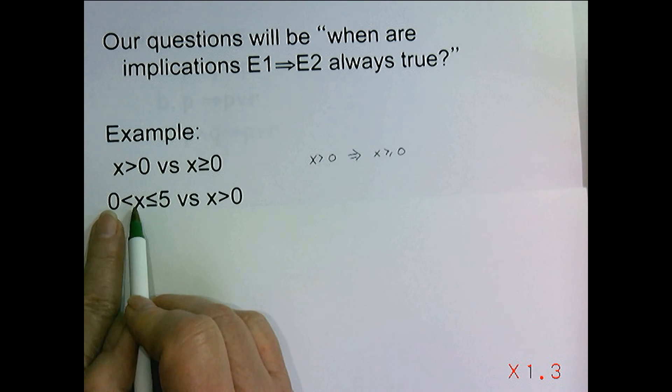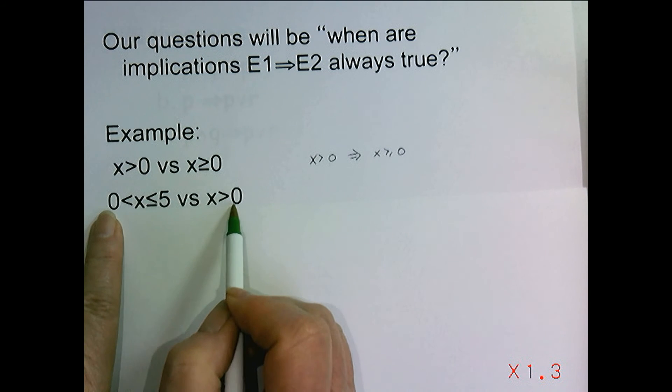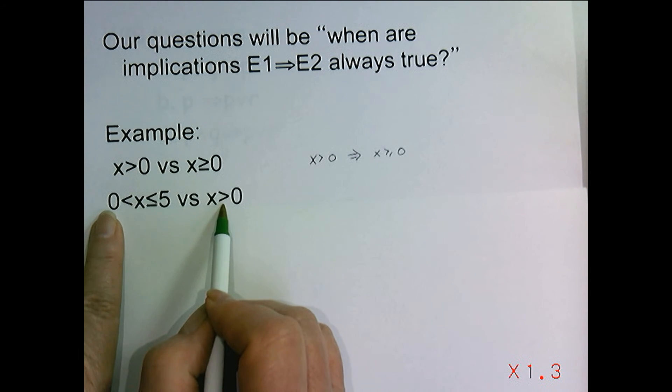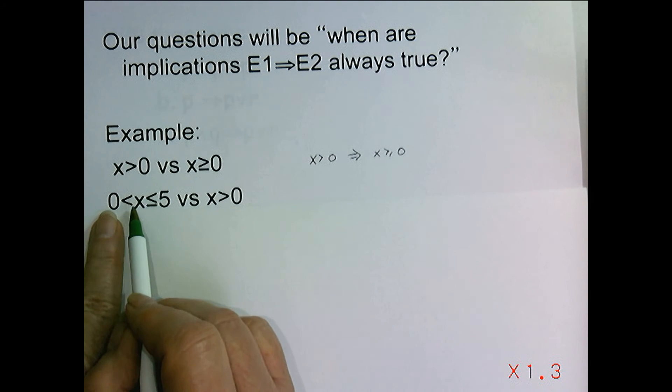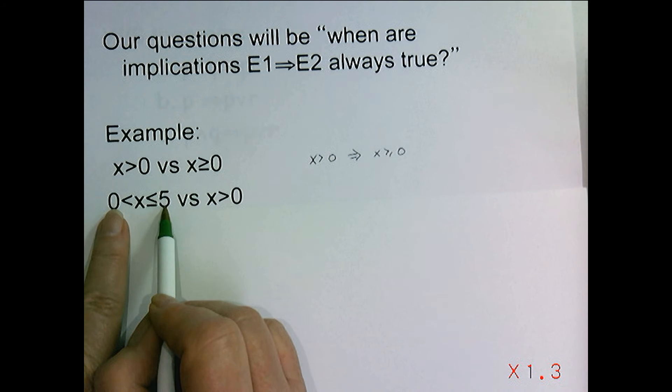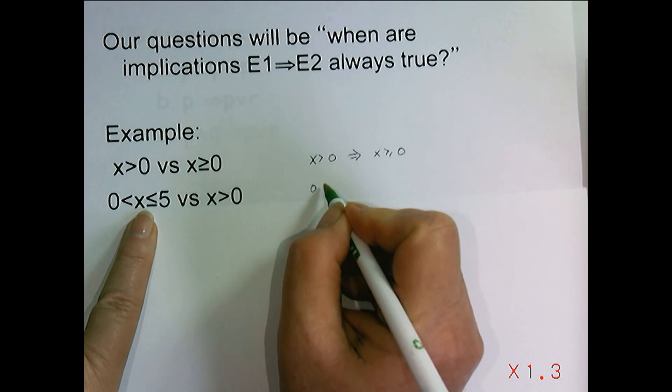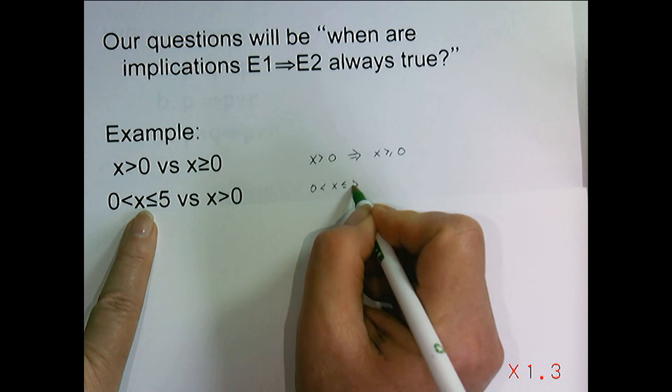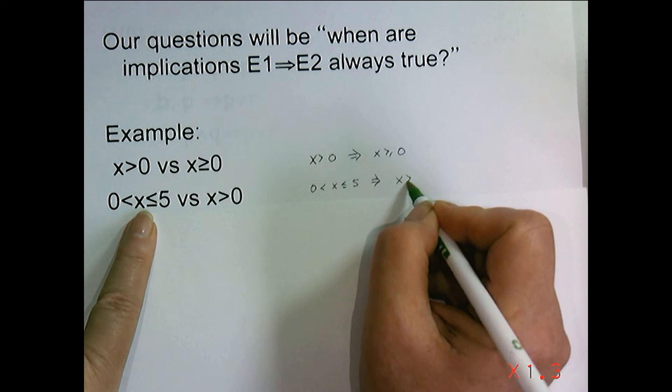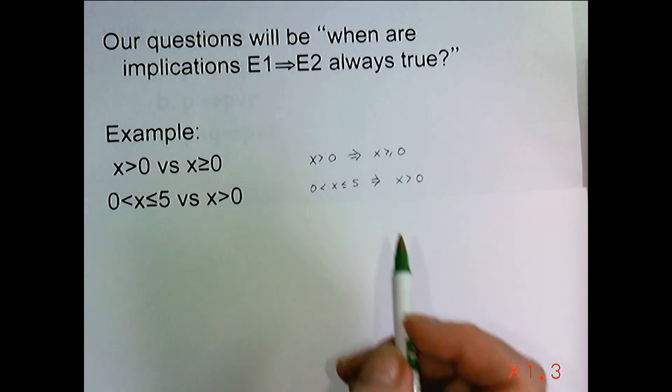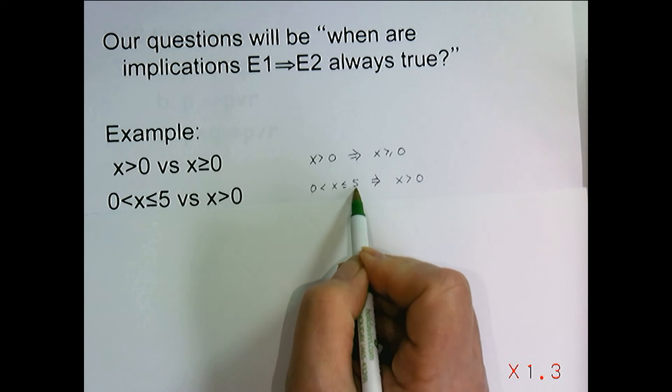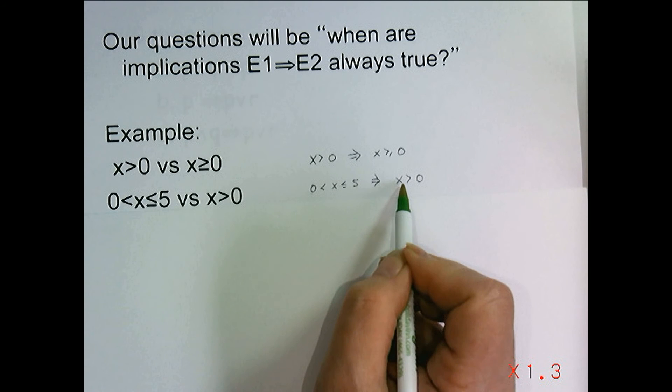In this particular case, if we wanted to compare x being between 0 and 5, not including 0 but including 5, versus x being greater than 0, well, 6 doesn't make this true but it does this. Anytime we pick a number between 0 and 5, if it makes this expression true, it's going to be the case that the value is greater than 0. So again, 0 less than x less than or equal to 5 implies that x is greater than 0, which means that 0 being less than x being less than or equal to 5 is stronger than x being greater than 0.